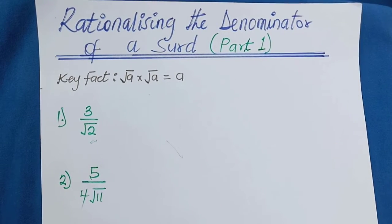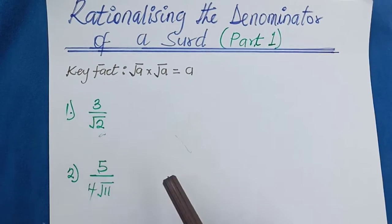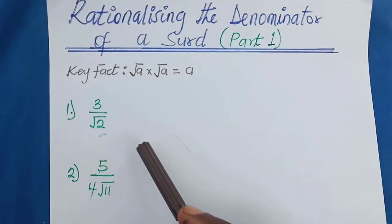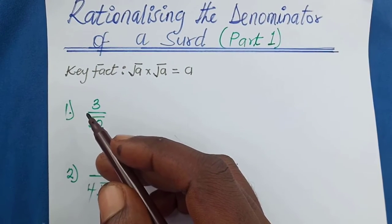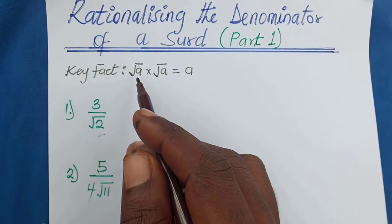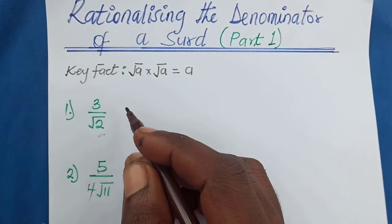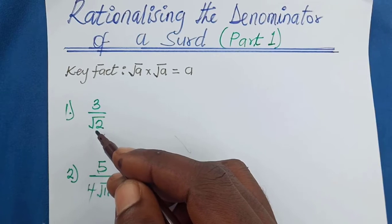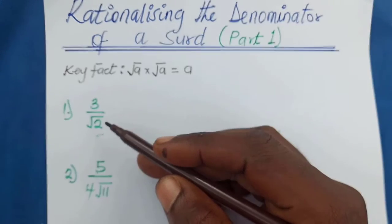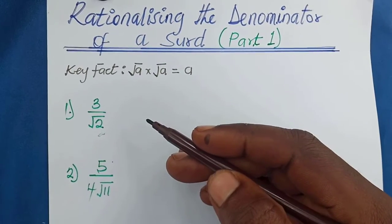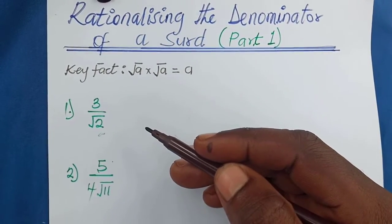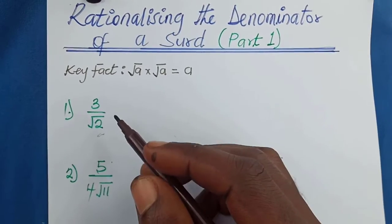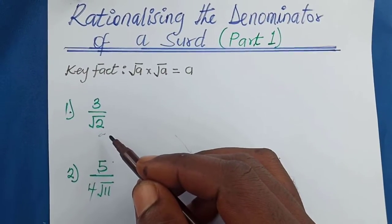Today we are going to talk about how to rationalize the denominator of a set — specifically monomial denominators. Binomial denominators will be covered in the next session. Recall from previous videos that the square root of a times the square root of a gives you a. The whole idea of rationalizing the denominator is to make the denominator a rational number. To do that, multiply both the numerator and the denominator by the rationalizing factor of the denominator.